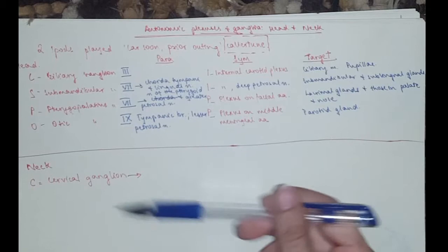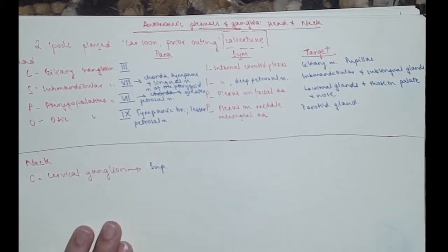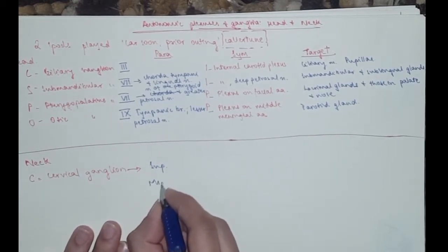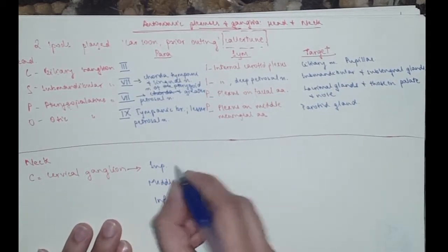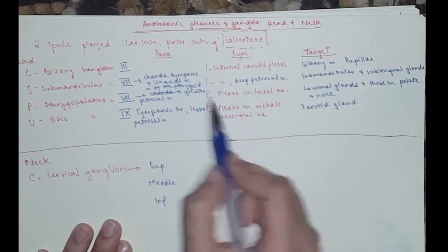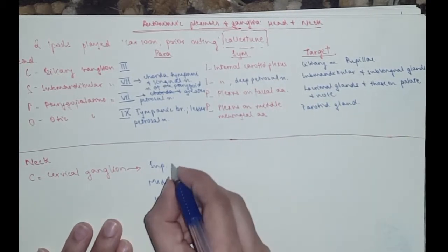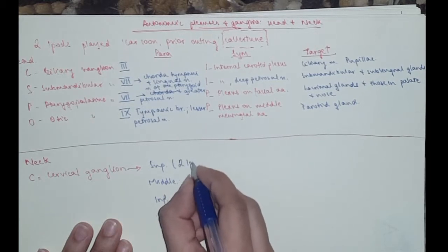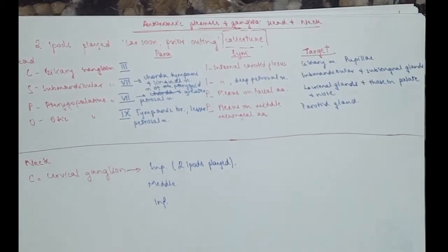Then we move on to the neck. So the neck has got the cervical ganglion. There are three. There is a superior cervical ganglion, a middle one, and an inferior cervical ganglion. So all of the sympathetic plexuses, all two iPods plate is in the superior. All of them are the superior cervical ganglion. So I'm going to write here two iPods plate. So it's the largest one.